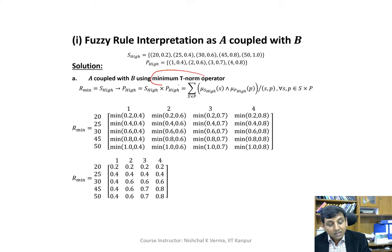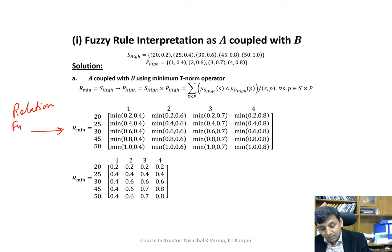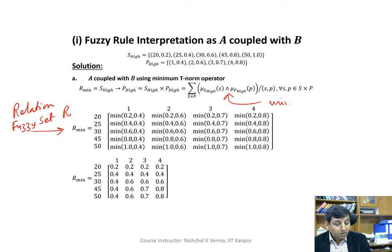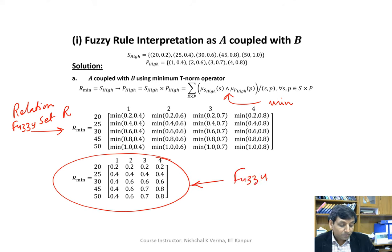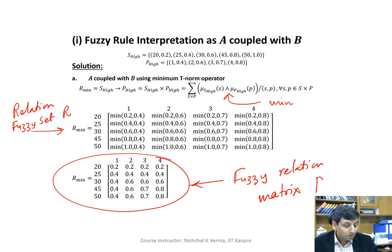Using the first t-norm operator — the minimum t-norm — we find the fuzzy relation matrix R_min. We use the min operator, applying it to all pairs of membership values. We have already done this exercise in previous lectures. Applying the min operator to each pair yields the fuzzy relation matrix R_min.